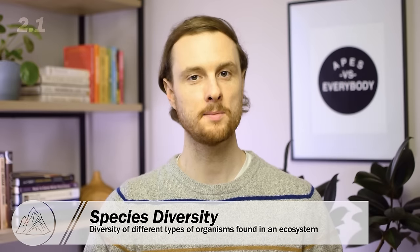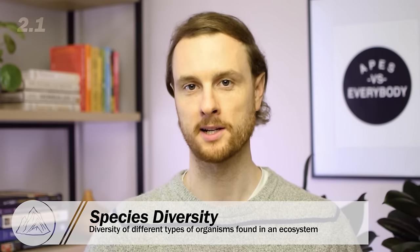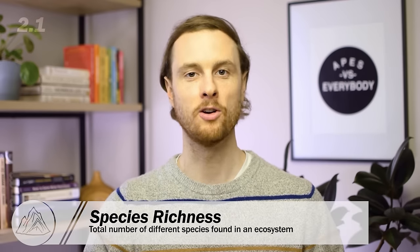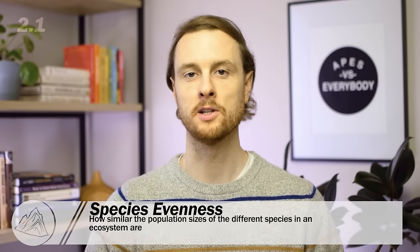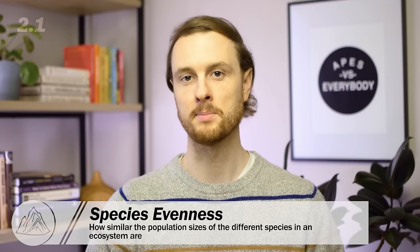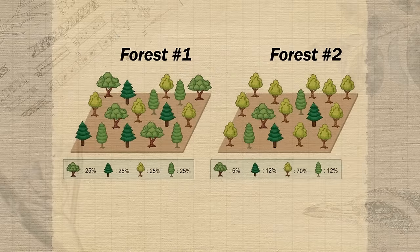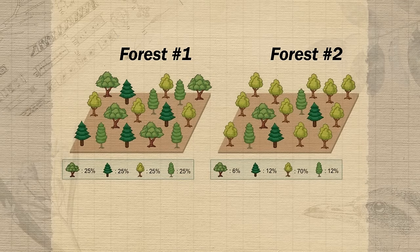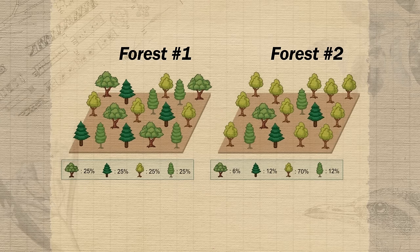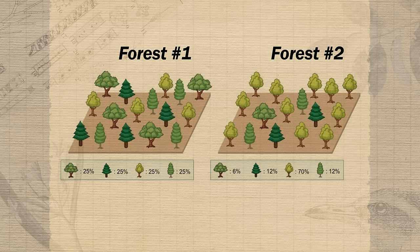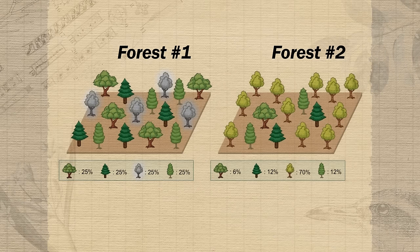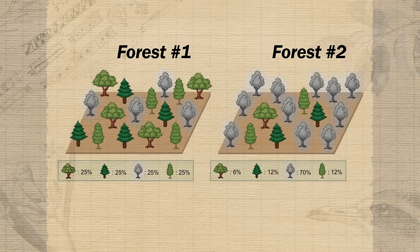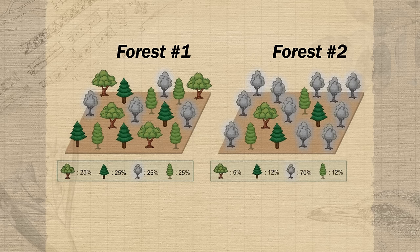Species diversity is the diversity of different types of organisms found in an ecosystem. The easy way to measure it is species richness — just a count of the total number of different species found in a given ecosystem. But higher species richness doesn't necessarily mean more species diversity. We also want to consider species evenness, which is the distribution or balance of the population sizes of all the different populations present. Even though two forests may have the same species richness, the one with higher species evenness is more resilient — if disease spread among one deciduous tree species, there would still be plenty of conifers or other deciduous species to repopulate. In a forest dominated by one species, disease could cause it to lose 70% of its tree cover.